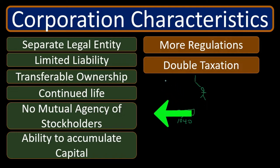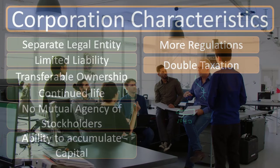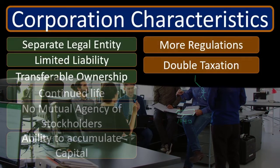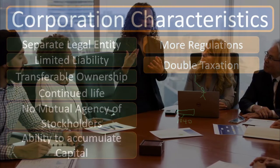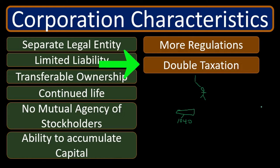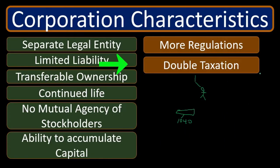Another downside is the corporate structure itself. While the lack of mutual agency is a benefit compared to partnerships, the corporate structure is more rigid, meaning owners are often a step removed from the decision-making process. This can lead to its own type of agency problems with management: management acts as an agent to represent the owners — the stockholders — but because of that step removal, management may have incentives to act in ways that are more personally beneficial rather than beneficial for the stockholders.